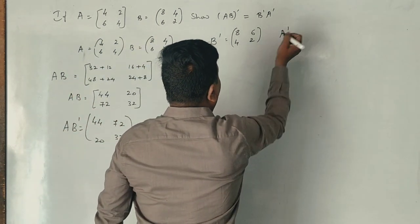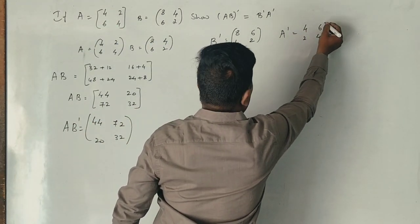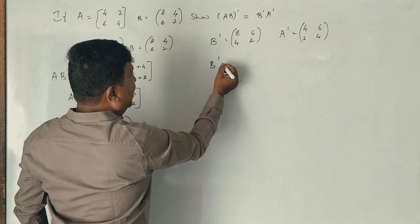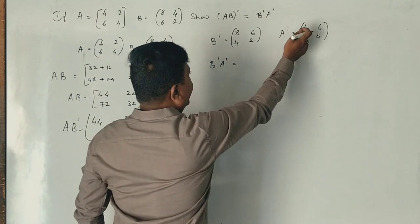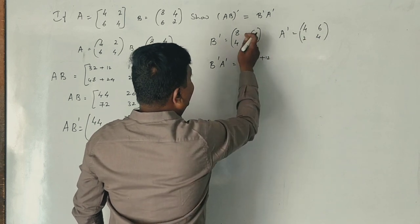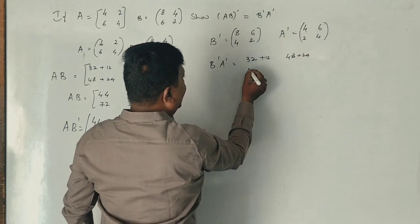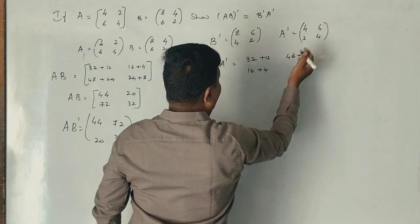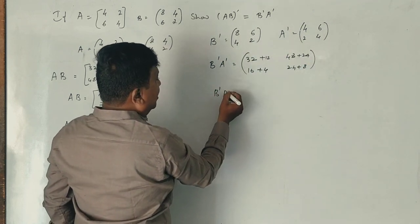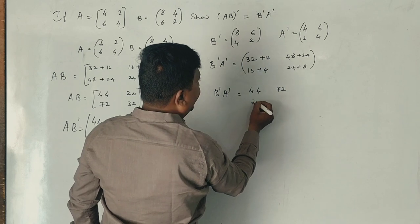Now the inverse: A inverse into a column. Clear? Now, B inverse into A inverse. First row, second column. Then that's the 3rd column and that's the 8th column. Then that's the 8th column and that's the 4th column. Then that's the 4th column. Second row of A into first column of B and second column of B.